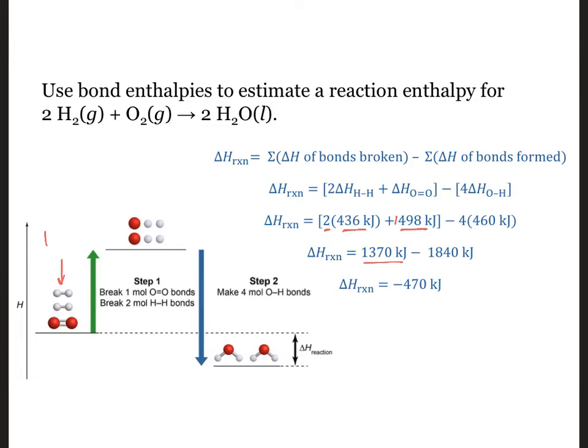This gets us to the top of the energy plateau where we have six gas phase atoms to combine. Making bonds releases energy. Referring back to the diagram, we see that we need to make four hydrogen-oxygen single bonds at 460 kilojoules of energy released per mole of bonds. This gives us 4 moles times 460 kilojoules per mole equals 1840 kilojoules.